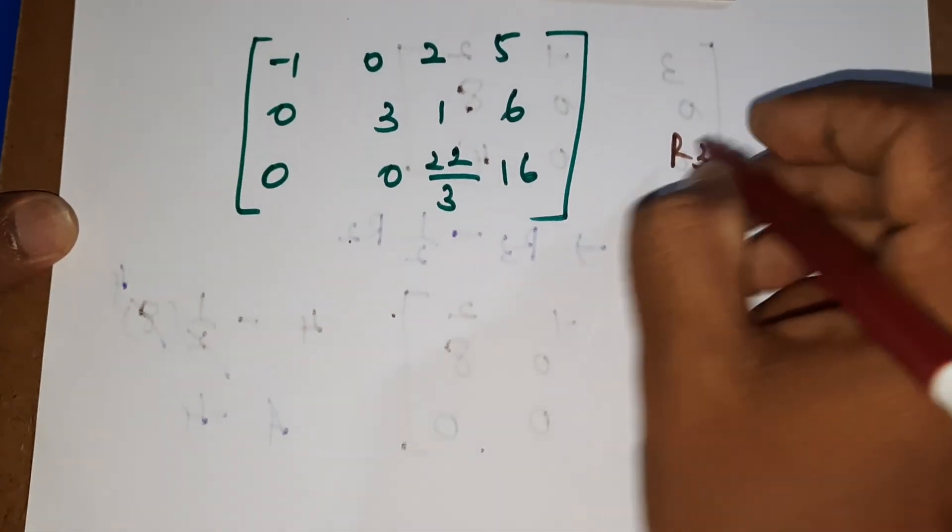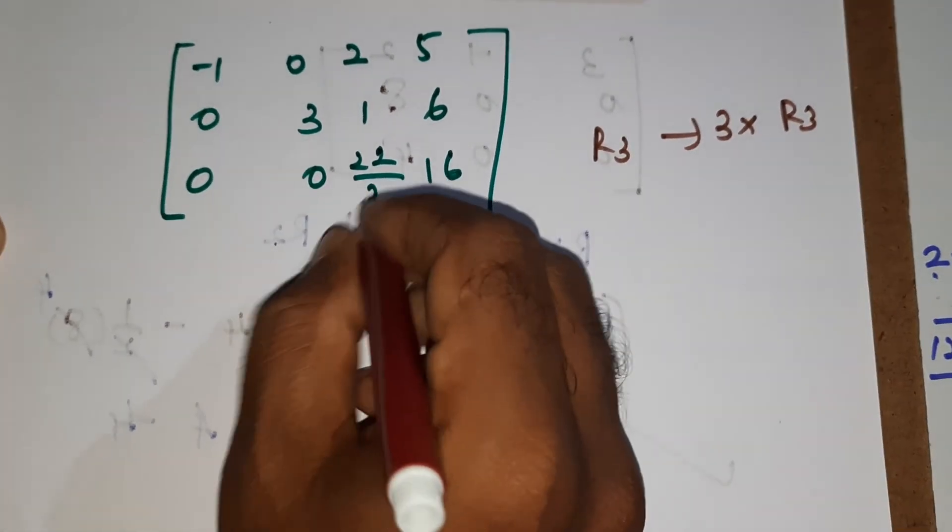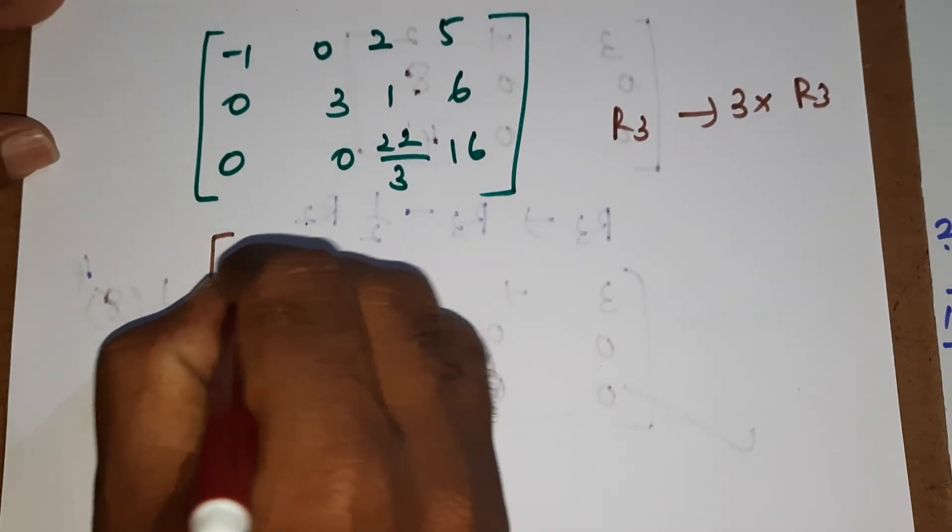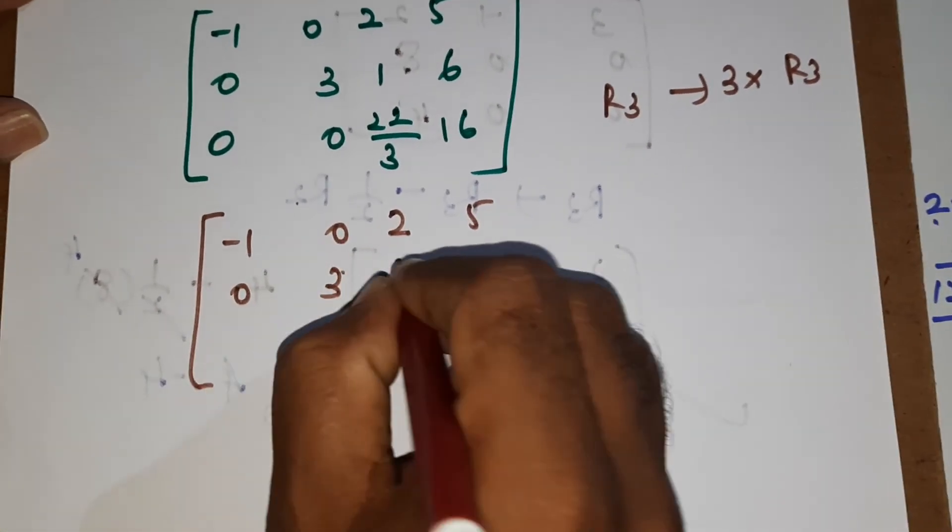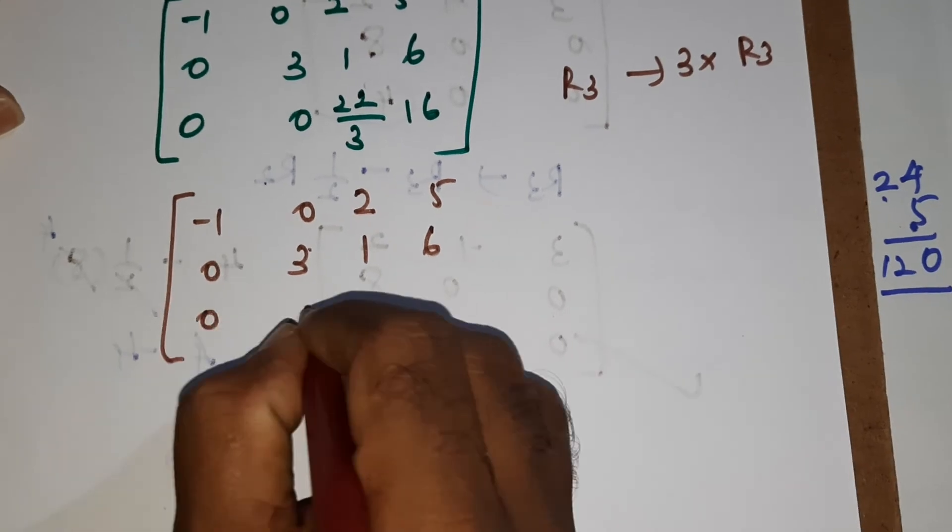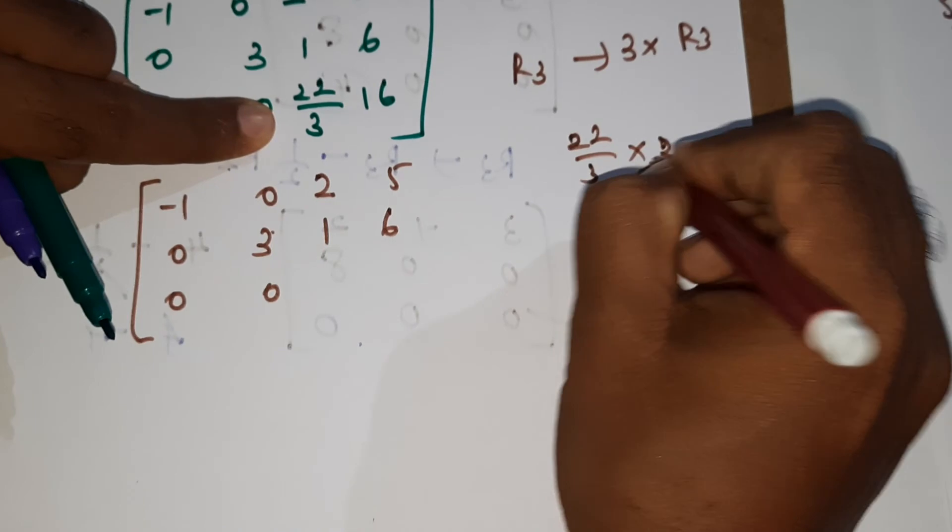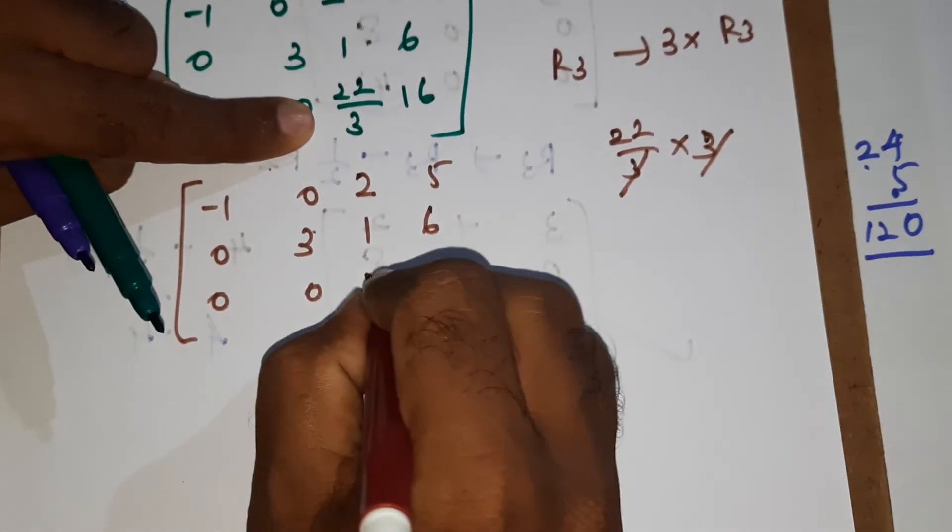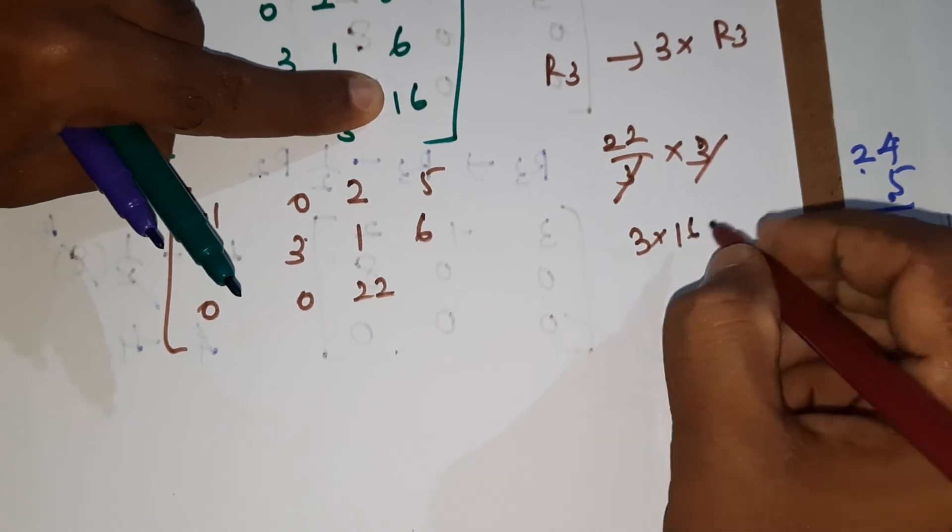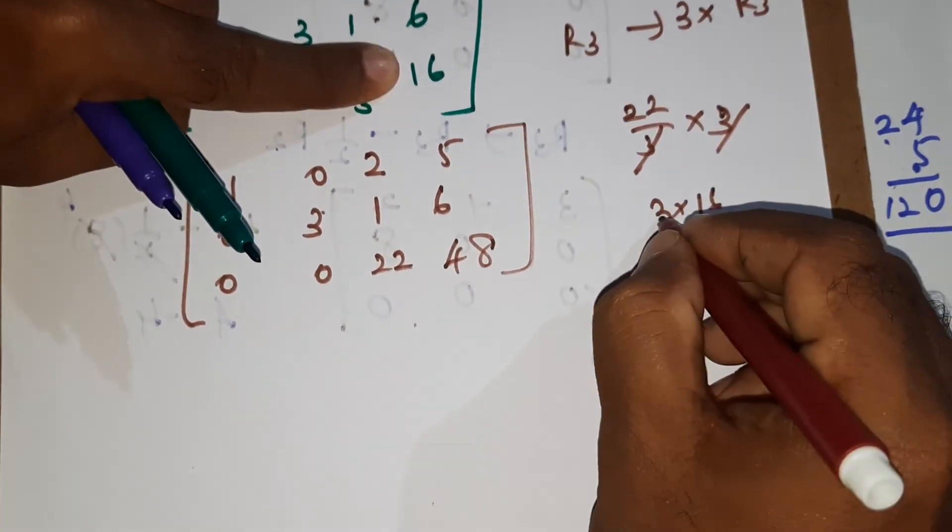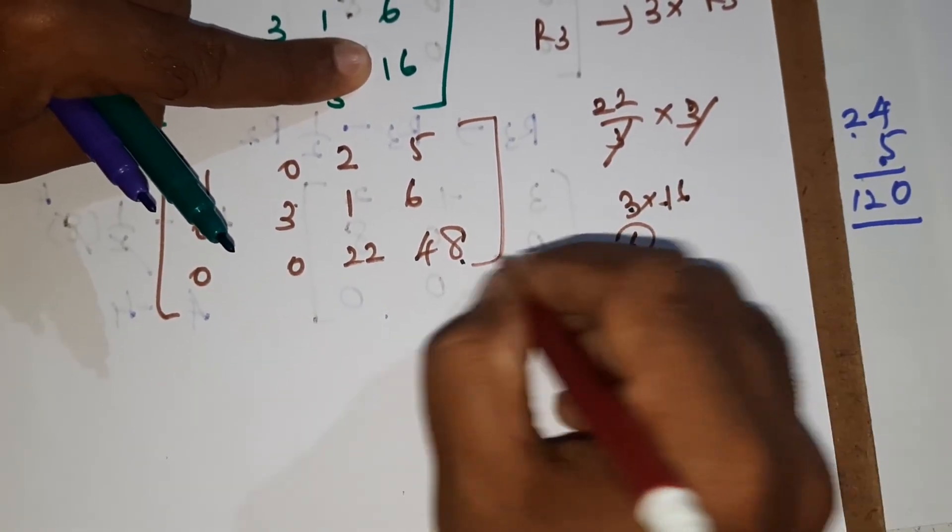Row 3, only we need to multiply 3 into R3. 3 into R3 means R1, R2 as it is, what is R1, R2, minus 1, 0, 2 and 5, 0, 3, 1, 6, then 0, 0. So 22 by 3 into 3, definitely 3, 3 will be cancelled means 22 will come. Next, 3 into 16 means automatically value will be 48, because 3 sixes are 18, so 8 carry 1, 1, 3 is 3, 3 plus 1 is equal to 4.